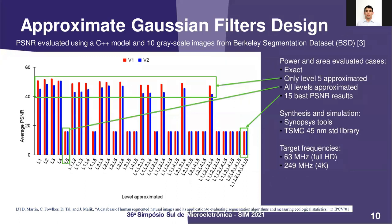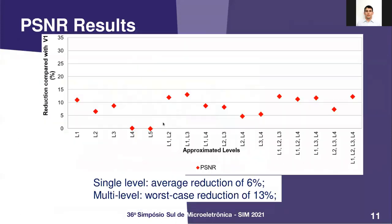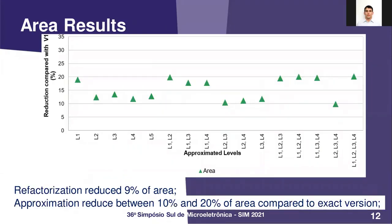We evaluated all combinations without level 5 approximated and two corner cases in terms of power and area using two frequencies. Comparing the PSNR results of V1 and V2 approximate versions, we noticed that V2 reduced the PSNR in most cases evaluated due to the combination of refactoring and approximation. V2 kept the same result as V1 while reducing area because of the decrease in the number of adders. When approximation is applied, the power consumption reduces even more because some gates are removed from adders, and the combination of refactoring and approximation decreases area even further due to the reduction in gates used to implement each approximate adder.